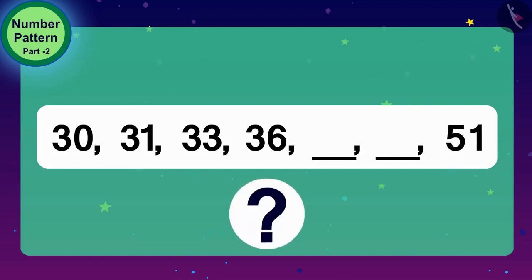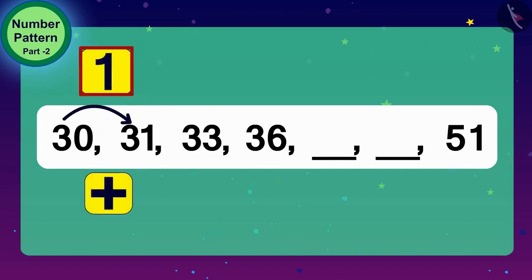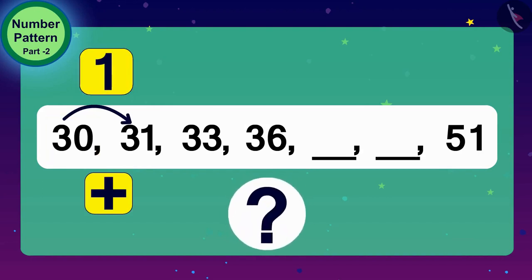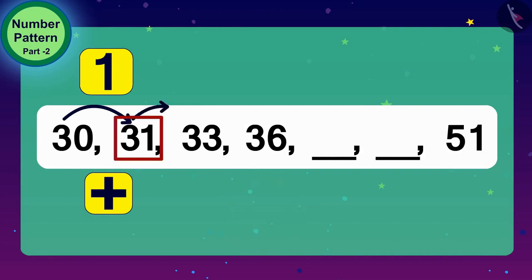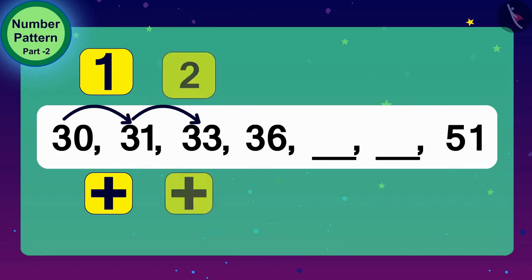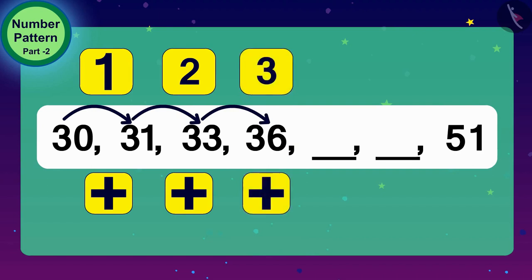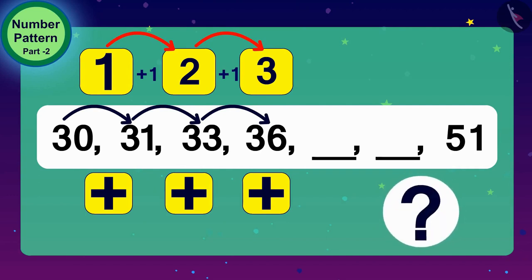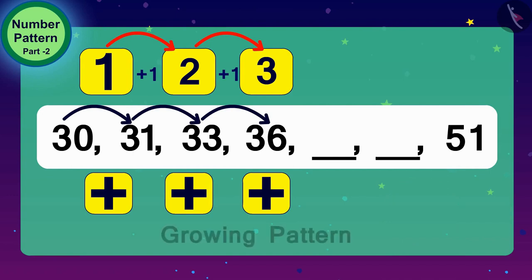Let us find the rule of this number pattern. What would we do if we had to reach from 30 to 31? Exactly, we will add 1 to 30. And what do we have to do to get 33 from 31? Yes, we have to add 2. And finally, if we have to reach 36 from 33, what will we do? 3 will be added to 33. Children, you can see that the number being added every time is increasing by 1. This number pattern is a growing pattern.